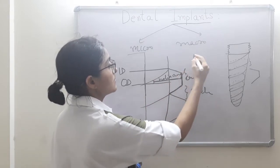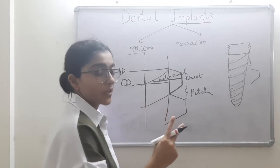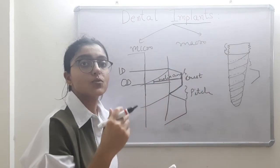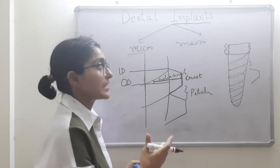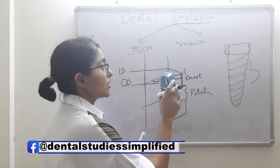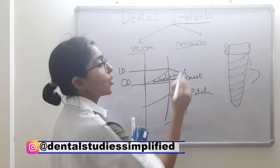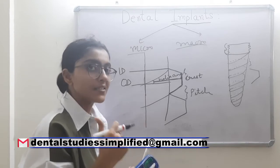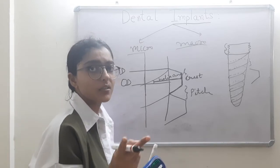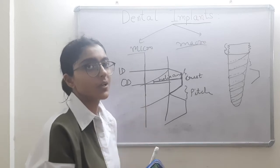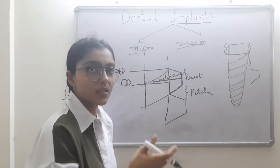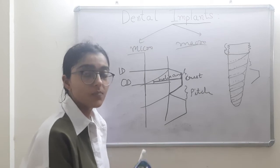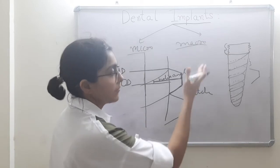Micro threads are small threads located at the collar of the implant. Their purpose is to dissipate and distribute the forces arising at the implant collar. This concludes macrostructure: parallel vs. tapered (tapered wins), self-tapping vs. non-tapping (self-tapping wins), implant threads (V-shape, square, buttressing, reverse buttressing), and micro threads at the collar.